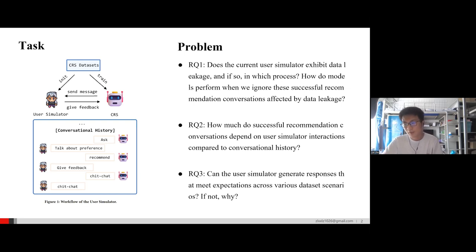First, does the current user simulator exhibit data leakage, and if so, in which process? How do models perform when we acknowledge the successful recommendation conversations affected by data leakage? Second, how much do successful recommendation conversations depend on user simulator interactions compared to conversational history? Third, can the user simulator generate responses that meet expectations across various scenarios? If not, why?